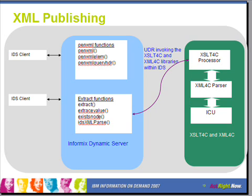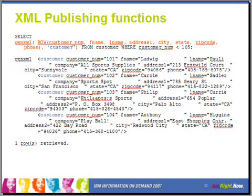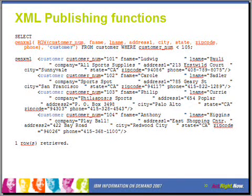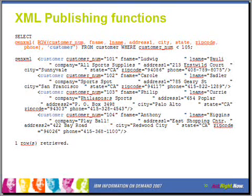Let's look at examples of these functions. The GenXML function takes a list of columns as a row value, and the second argument is the name of the row element you want to create. Here, 'customer' is passed as the second argument, which becomes the name of the row element for each row in the result set. The values for each column are returned as attributes corresponding to the column names: columnNUM, FNAME, LNAME, company, and so on.